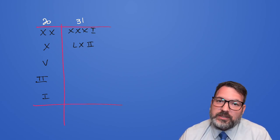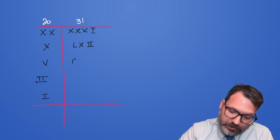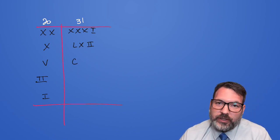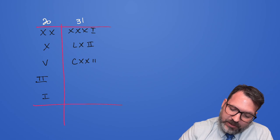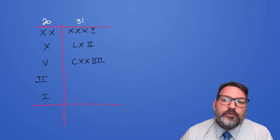Doing that again, two L's make a C, because two L's, 50 plus 50 is 100, and C is the symbol for 100. That one X becomes two X's, and those two I's become four I's.